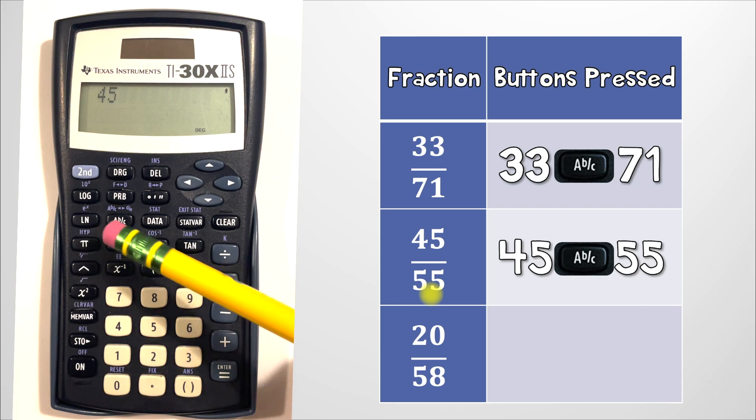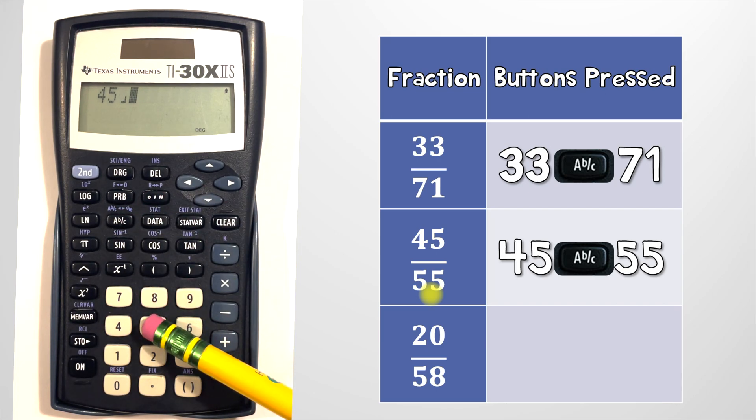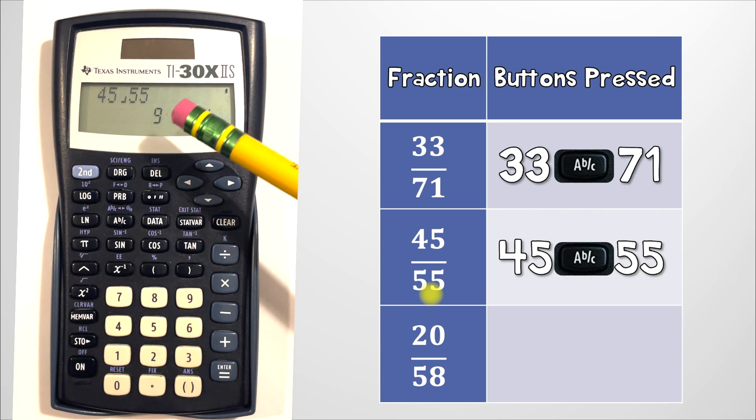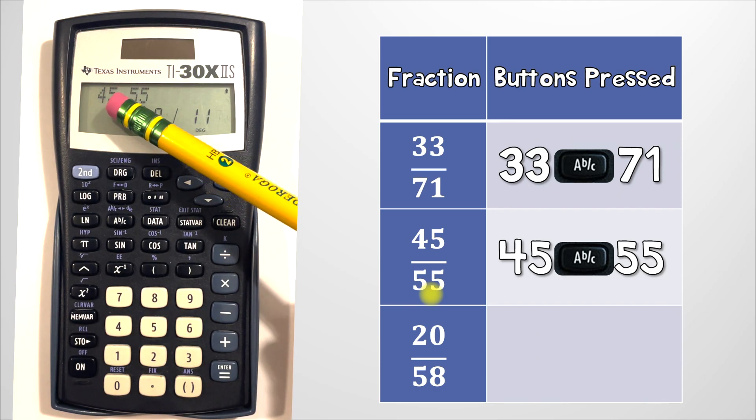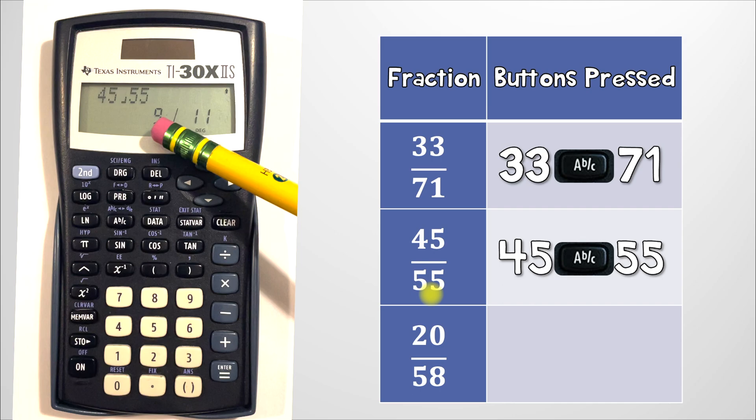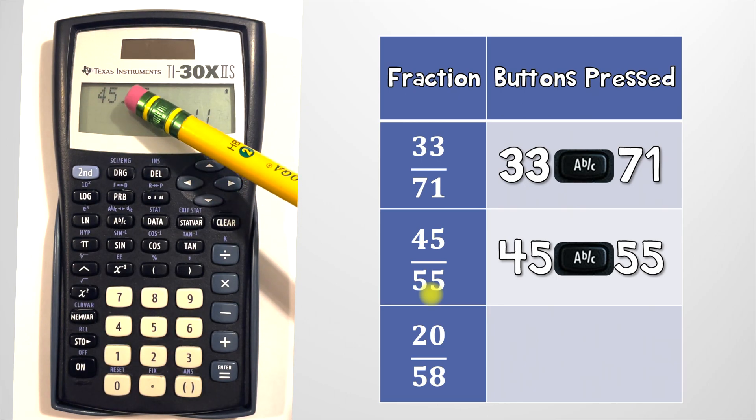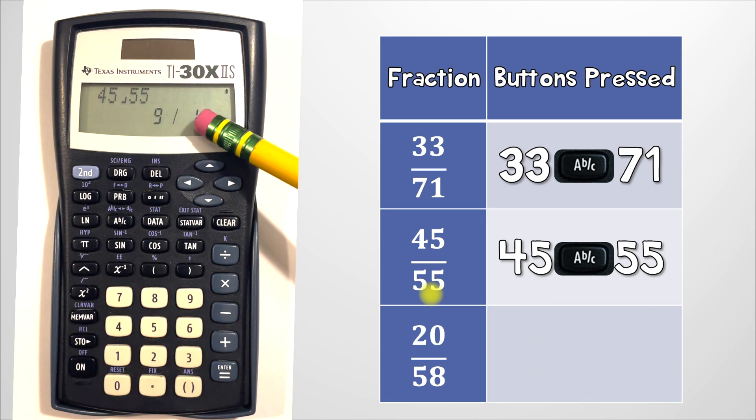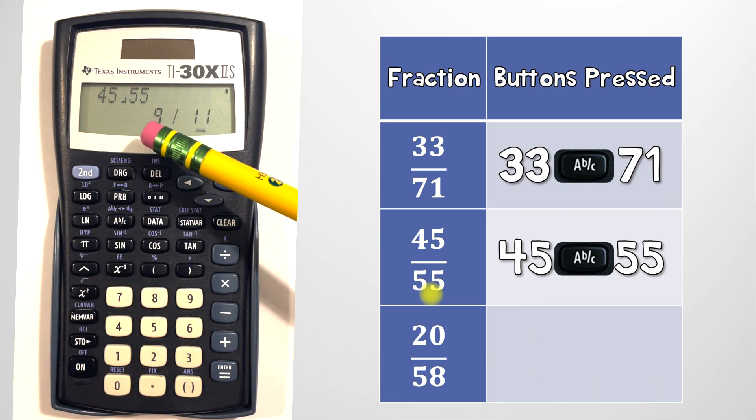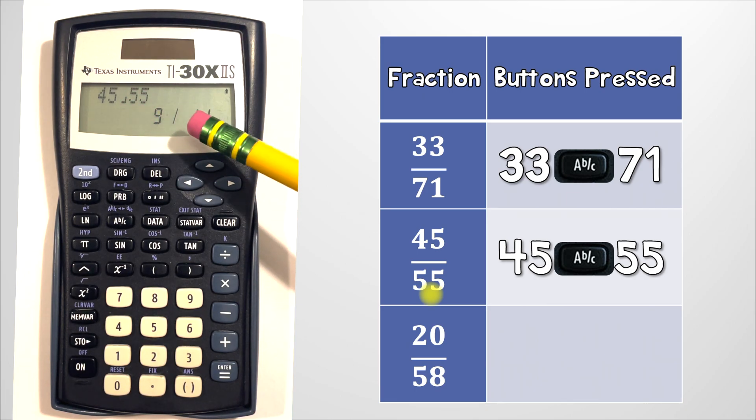45, ABC, 55, enter. Now even though it's 45 bracket 55, because it can be simplified the calculator did that for you. It reduced everything by 5. 45 divided by 5 is 9 and 55 divided by 5 is 11. So that simplifies to the fraction 9 over 11.